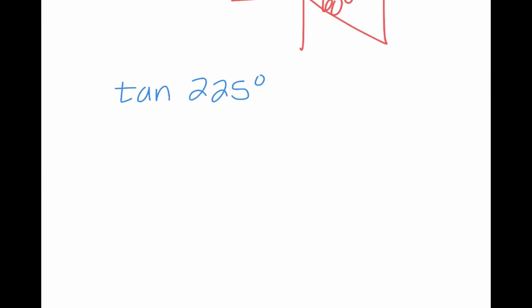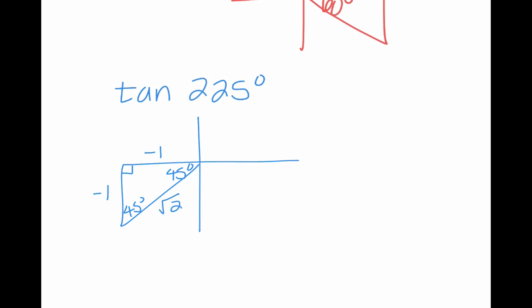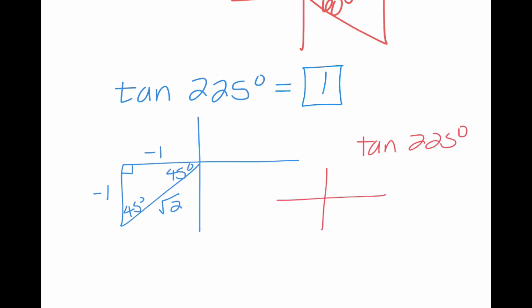So let's try one more using this method — tangent of 225 degrees. 225 is in quadrant 3, and it is 45 degrees away from the x-axis. So opposite from 45, I have negative 1, negative 1, and radical 2. I know tangent is opposite over adjacent. So I get negative 1 over negative 1, which is positive 1. And that does make sense that in quadrant 3, tangent should be positive. If I was thinking about this just using memorization, I would think about it the same way: it's in quadrant 3, it's 45 degrees away. I know tangent of 45 is 1, and I just need to think — in quadrant 3, tangent is positive, so that would be our answer.